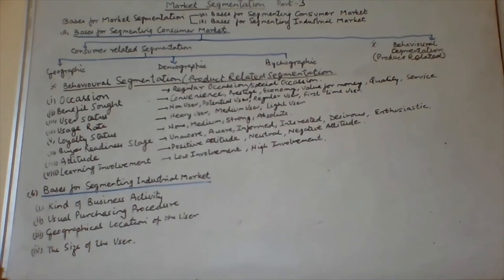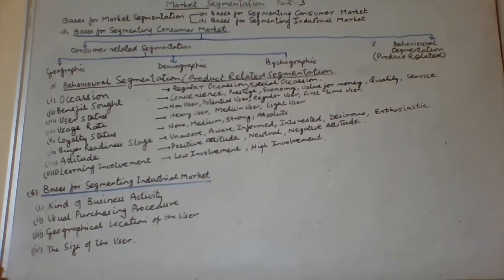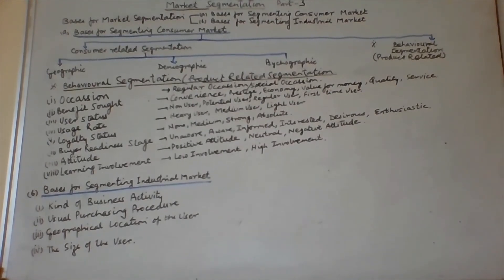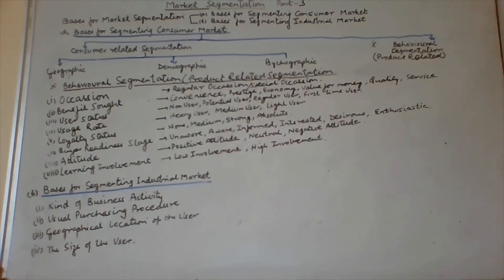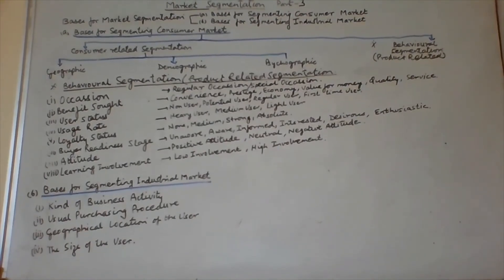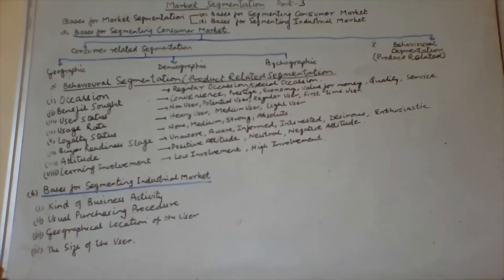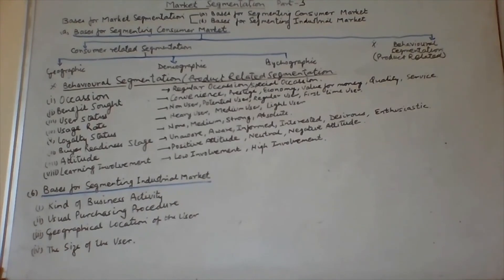This covers the behavioral aspect of segmentation, which is product-related. Product-related segmentation studies product aspects in association with the geographic, demographic, and psychographic aspects of customers. If we are able to study both, we can match them and design our marketing strategy to sell the product.